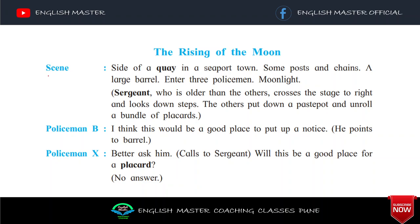The Rising of the Moon — abhi scene padhenge. Scene: Side of a quay in a seaport town. Some posts and chains, a large barrel. Enter three policemen. Moonlight — yeh samay kaun sa hai? Moonlight ka, yaani ki raat ke bara bajne ka baat ka samay hai. Side of a quay in a seaport town — to yaha par samundar kinare ek gaon hai, jahan boats khadhi hoti hain — ek port rehta hai, to yaha seaport town hai.